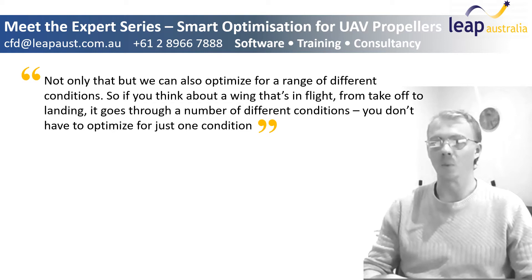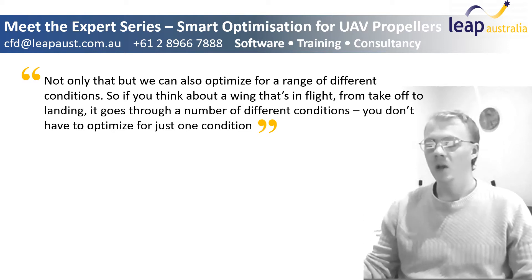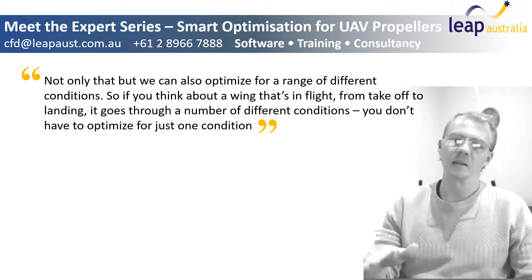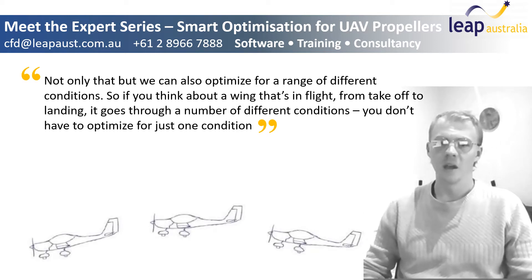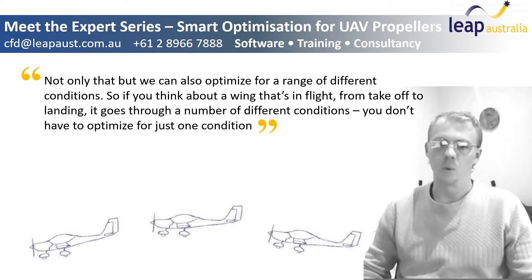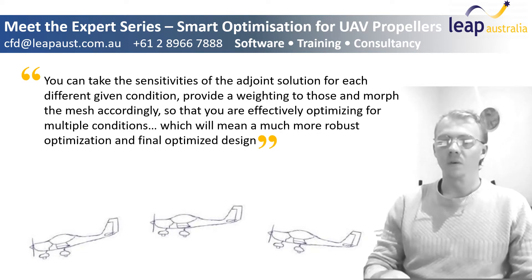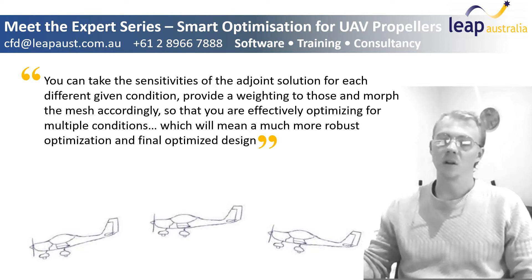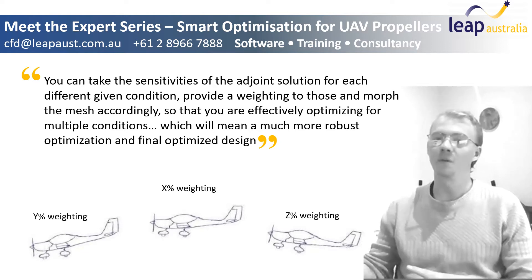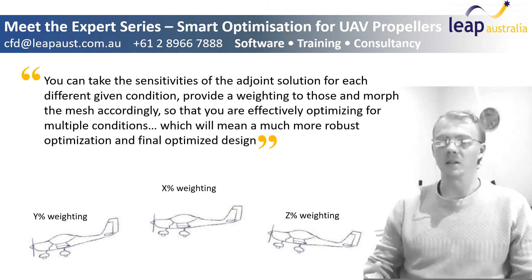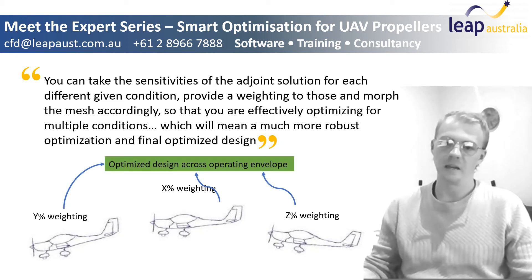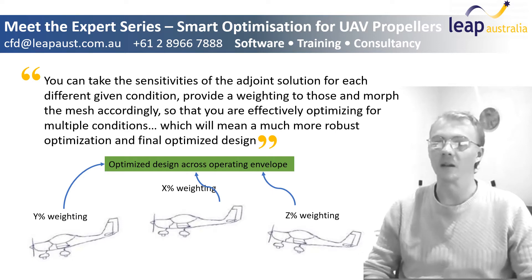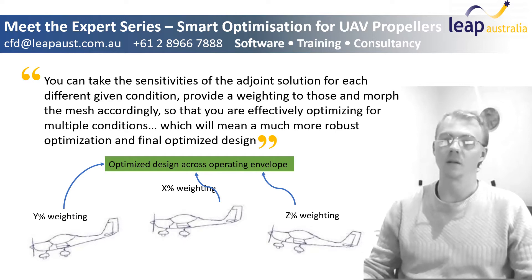Not only that, but we can also optimize for a range of different conditions. If you think about a wing in flight from takeoff to landing, it goes through a number of different conditions. You don't have to optimize for just one condition — you can take the sensitivities of the adjoint solution for each different condition, apply a weight to those, and morph the mesh accordingly, effectively optimizing for multiple conditions, which results in a much more robust final optimized design.